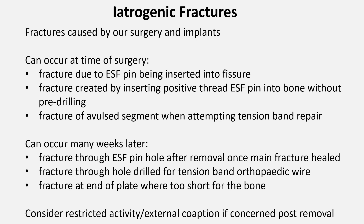Iatrogenic fractures — that is, fractures caused by our surgery and our use of implants — can occur at the time of surgery or many weeks or months later. An example during surgery would be a fracture developing along a fissure line due to the placement of an ESF pin within that fissure. Also, trying to drill a positive-threaded pin into bone without predrilling could result in fracture. Negative-thread pins officially don't need to be predrilled, but I often do. Another example would be fracturing the avulsed fragment when trying to repair an avulsion fracture with an arthrodesis wire and figure-of-eight tension band. Examples of iatrogenic fractures occurring after surgery include through a pinhole after removal of an ESF, or through the hole drilled for the figure-of-eight tension band wire — don't drill this hole right next to the cortex, but rather about a third of the way across the diameter of the bone.